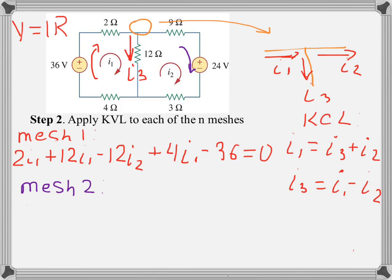Then the same thing for mesh 2. Starting with 9 ohms, we need to write 9I2, then plus 24, then plus 3I2. And because we're going against current I3, basically we can flip it. Negative I3 equals I2 minus I1. So we can say that the next component will be plus 12I2 and minus 12I1.